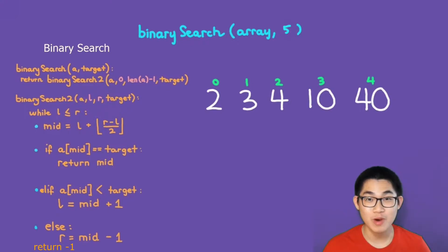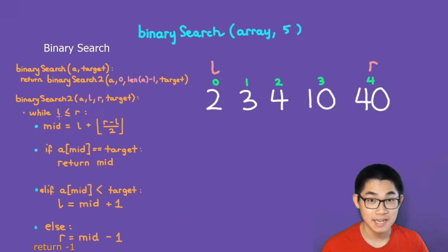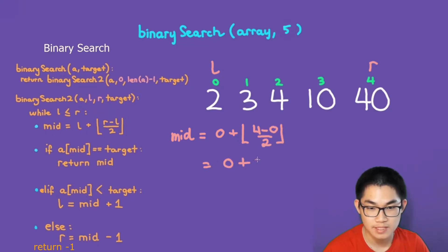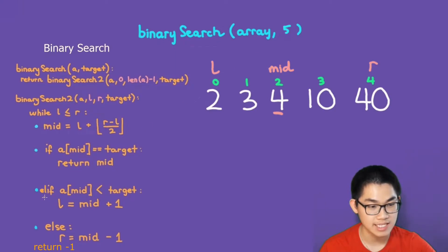Let's do another example. This time we want to binary search for number 5 in this array. The first step places L at the beginning and R at the end. Is left smaller or equal to right? Yes. We calculate mid: 0 plus floor of 4 minus 0 over 2 gives us 2. Array at mid is number 4. Is 4 equal to 5? No. Is 4 less than 5? Yes. So we move left to the right of mid and remove mid.